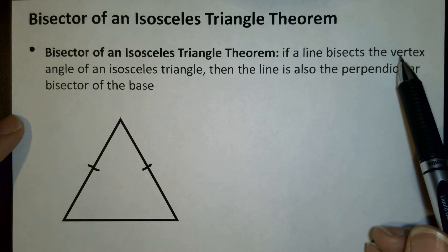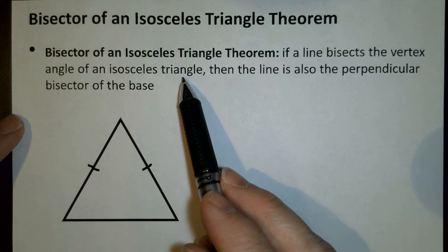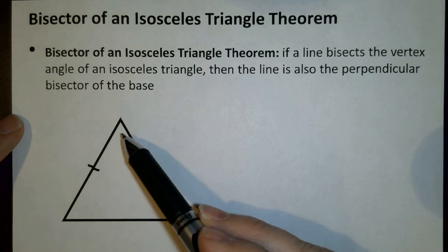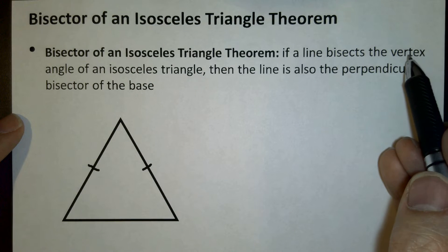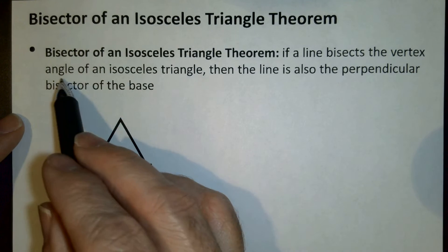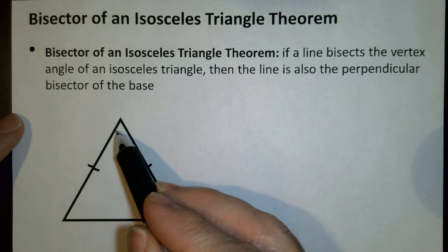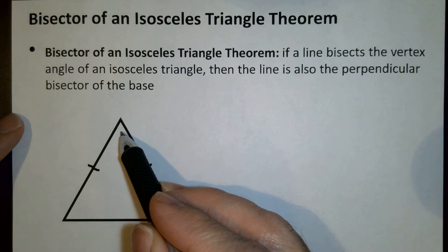If a line bisects the vertex angle of an isosceles triangle. So first off, here's our triangle. It is isosceles. We have two sides marked the same. And the vertex angle is where the two congruent sides come together. So this is our vertex angle here at the top.